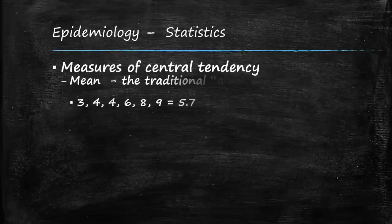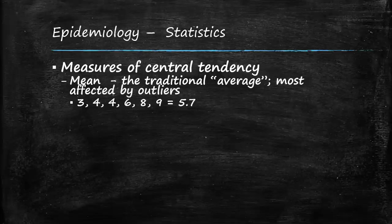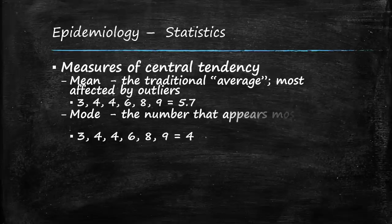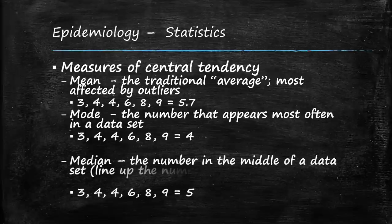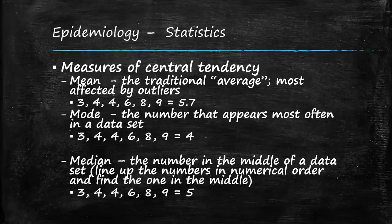Measures of central tendency: the mean, mode, and median. The mean is the traditional average, most affected by outliers — add all numbers and divide by the count. The mode is the number that appears most often. The median is the number in the middle of the dataset when arranged in numerical order — if two numbers are in the middle, find their average. In the example given, the mean is 5.7, the mode is 4, and the median is 5.